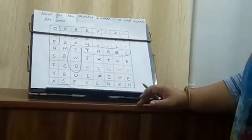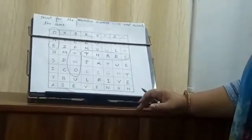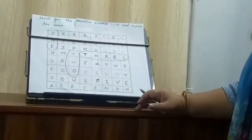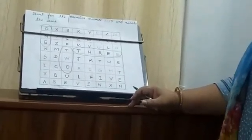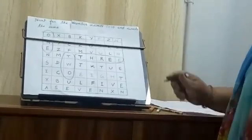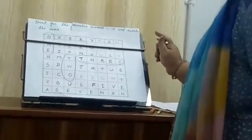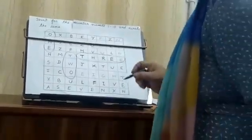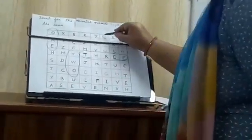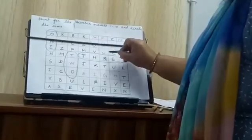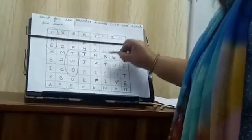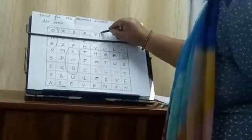Now after 3, what number will come? 4. Let's find out 4. Where is 4? F, O, U, R. 4.